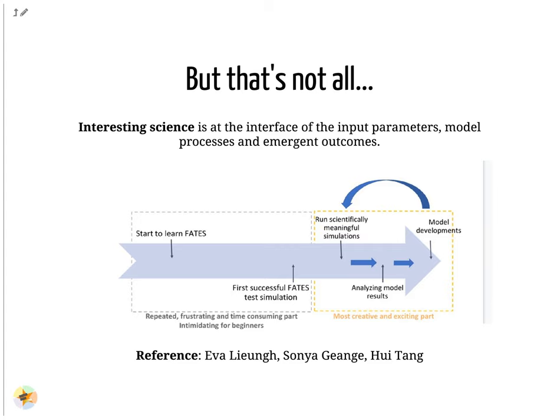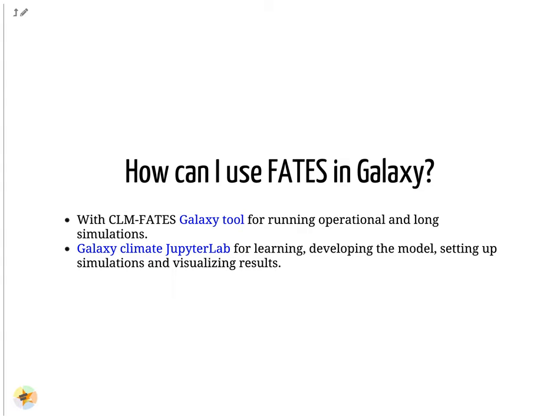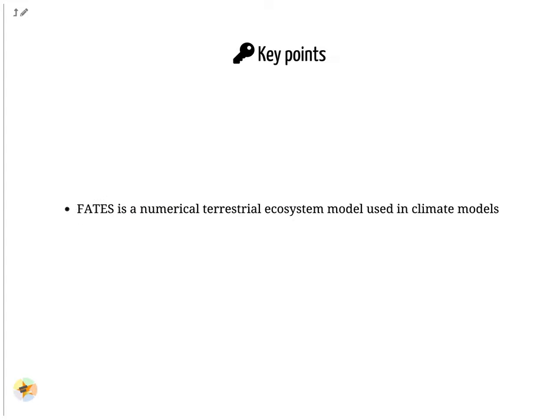However, once researchers manage to run FATES, they usually can contribute and improve the model. FATES in Galaxy aims at reducing the learning curve and help researchers to quickly produce scientific results. There are two ways to run CLM-FATES in Galaxy, and we suggest new users to start with the FATES Galaxy tool. For more advanced users and if you are willing to develop the FATES model, use the Galaxy Climate JupyterLab where you can develop new features, set up simple test simulations and visualize your results. The Galaxy FATES tool can then be used to run operational and long simulations. FATES is a numerical terrestrial ecosystem model used in climate models. Thank you for watching.